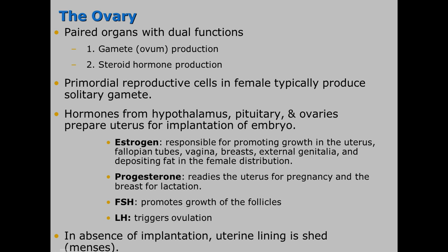The next topic is the ovary. These are paired organs with dual functions: gamete or ovum production, and steroid hormone production. Hormones from the hypothalamus, pituitary, and ovaries prepare the uterus for implantation of the embryo.